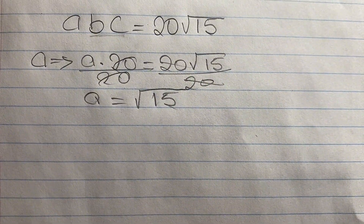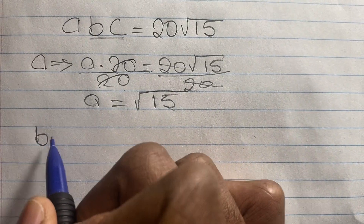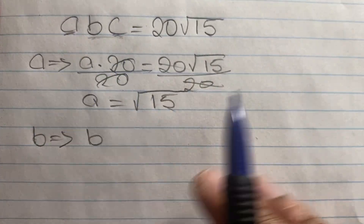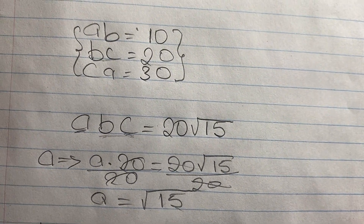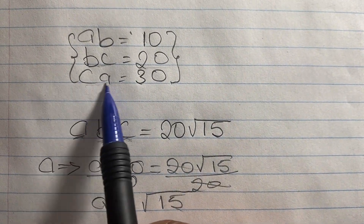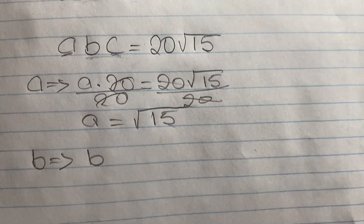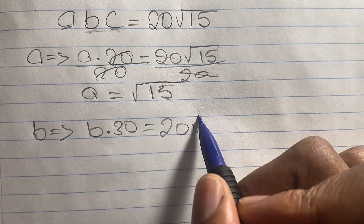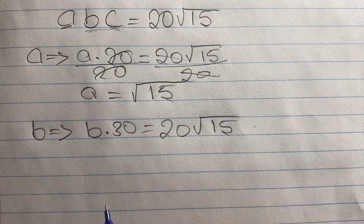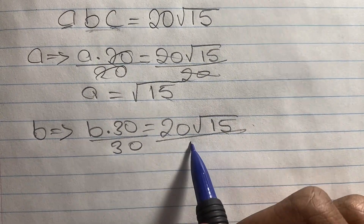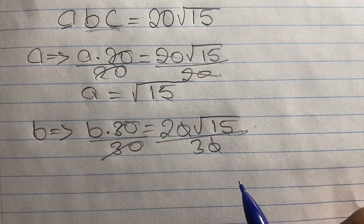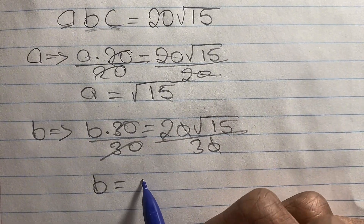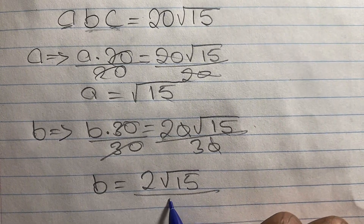Next we find the value of b by identifying the value of ac from our equations. Looking at equation 3, we see that ca equals 30. So we rewrite the equation as b times 30 equals 20 root 15. Dividing both sides by 30 and cancelling the zeros, b equals 2 root 15 over 3.